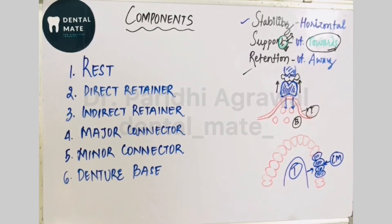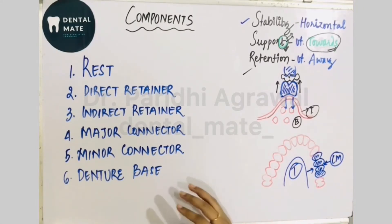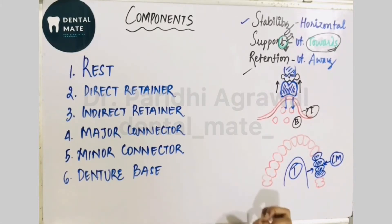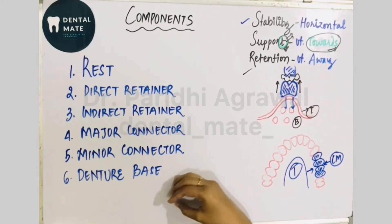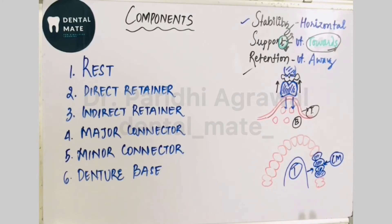Now let's talk about the components of the removable partial denture. A removable partial denture is any prosthesis that replaces some teeth in a partially dentate arch — an arch where some teeth are still present. This prosthesis replaces the missing teeth and can be removed from the mouth and replaced at will. It is also called a partial removable dental prosthesis.